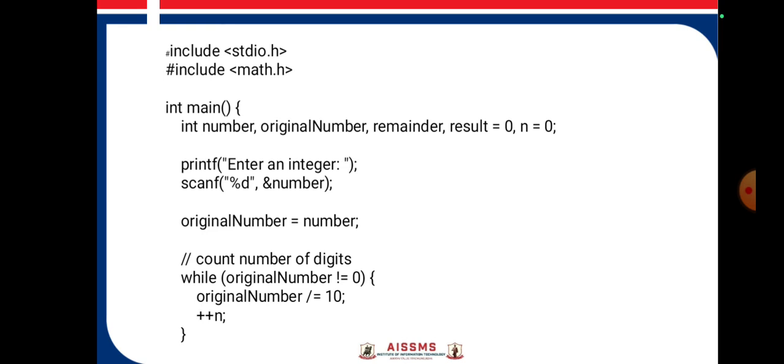to the result. Remove the last digit from the originalNumber variable by dividing it by 10. Compare the result with the original number. If they are equal, print the number is an Armstrong number; otherwise, print the number is